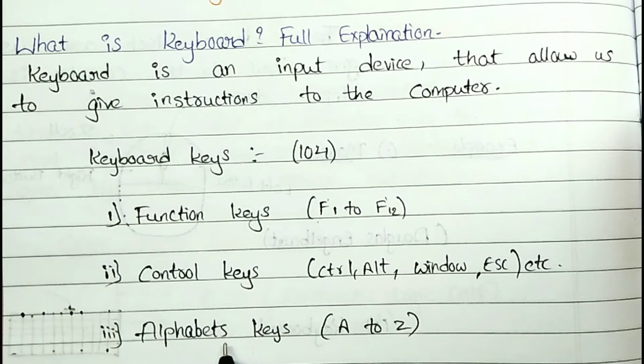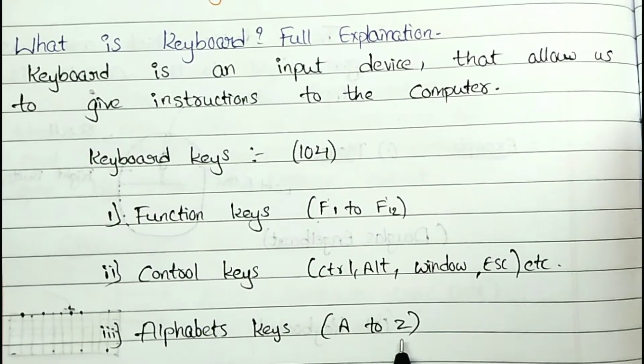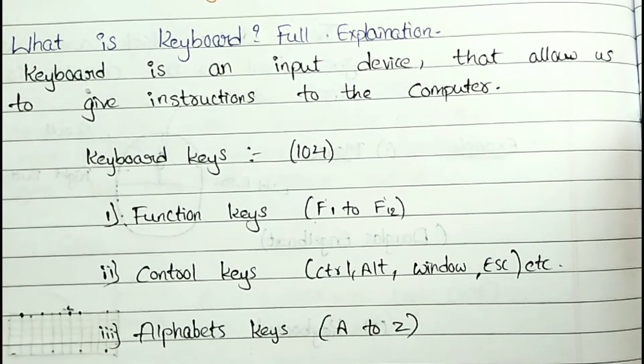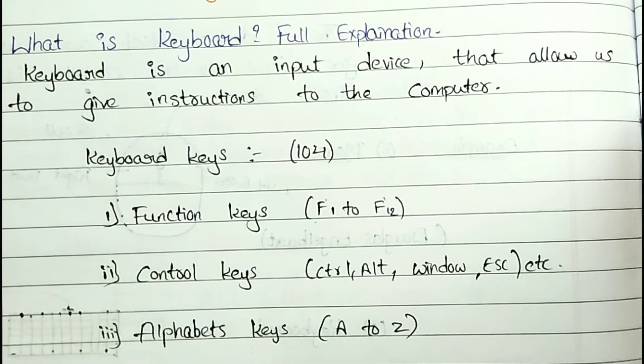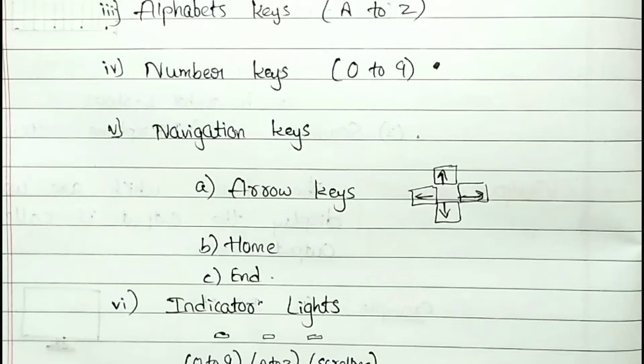And then, alphabet keys. The alphabet keys are from A to Z. And also, number keys. Number is 0 to 9. These numbers are 0 to 9.